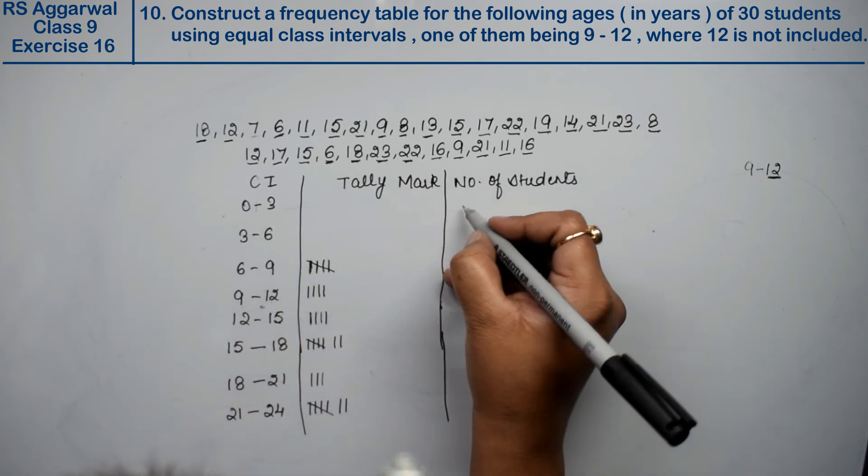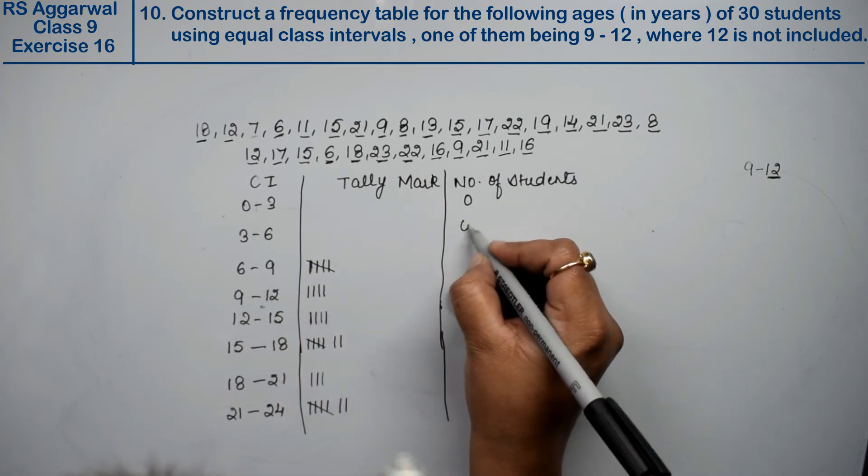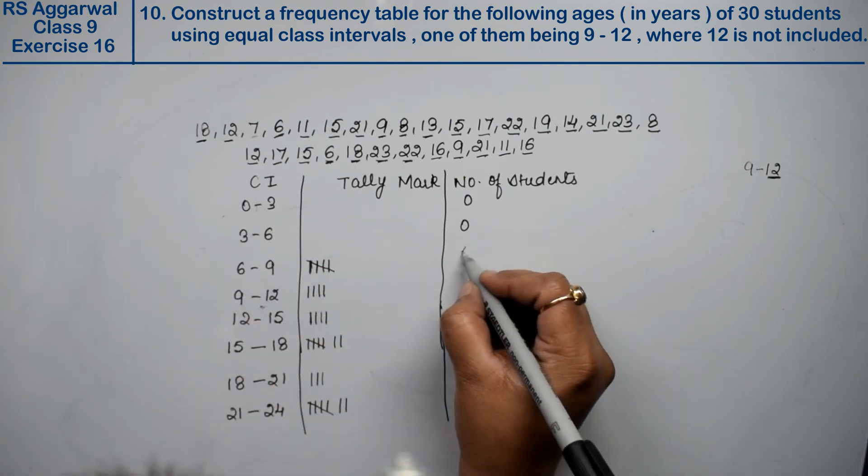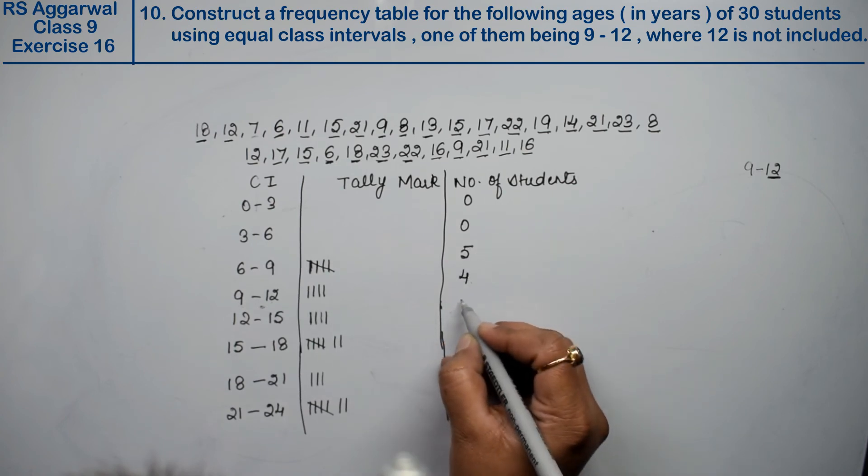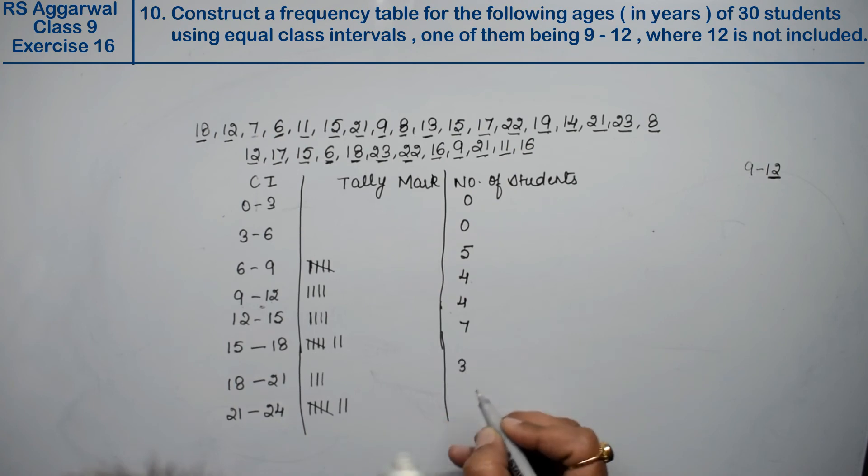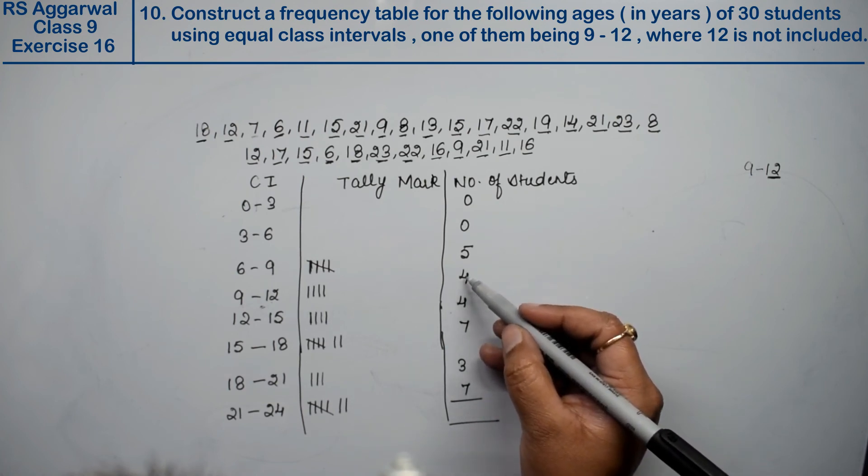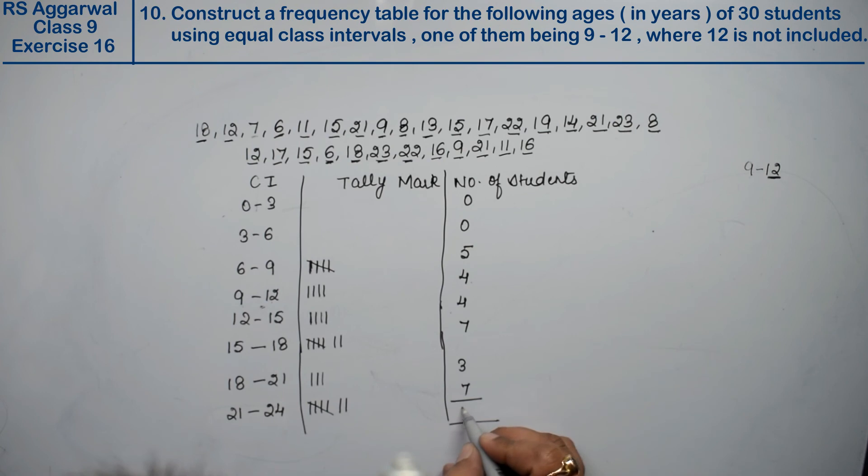In the first two intervals there are no students, so we write 0. You can write it or not. Now counting these, we have 5, 4, again 4, 5, 6, 7, 3 and 5. If you count, the total is 10, 21, 25, and 30. And how many students did we have? The question said the age of 30 students, so there were 30 students. This is the answer.